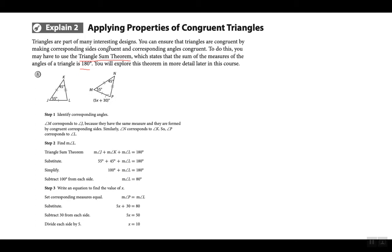The Triangle Sum Theorem — the word 'sum' means you add, so it's something about adding and triangles. I'm sure you all know because we've said it before: when you add up all the angles inside of a triangle, it always has to equal 180. That's what the Triangle Sum Theorem is — when you add up all the angles in a triangle, they always have to equal 180.